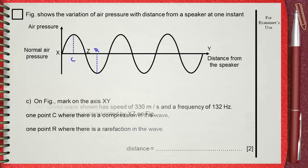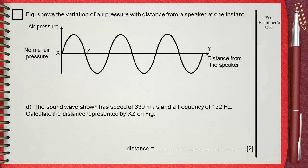Question D. The sound wave shown has a speed of 330 meters per second and a frequency of 132 hertz. Calculate the distance represented by XZ on figure.